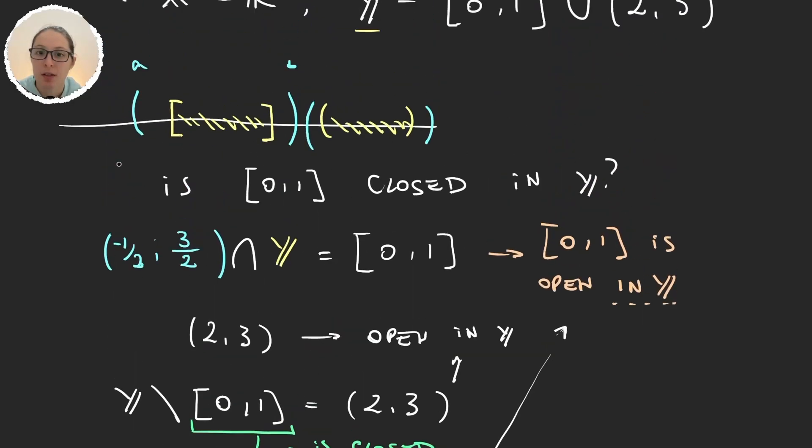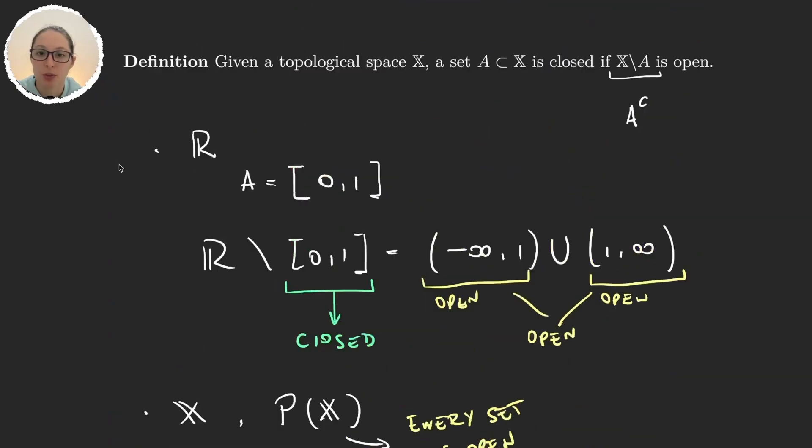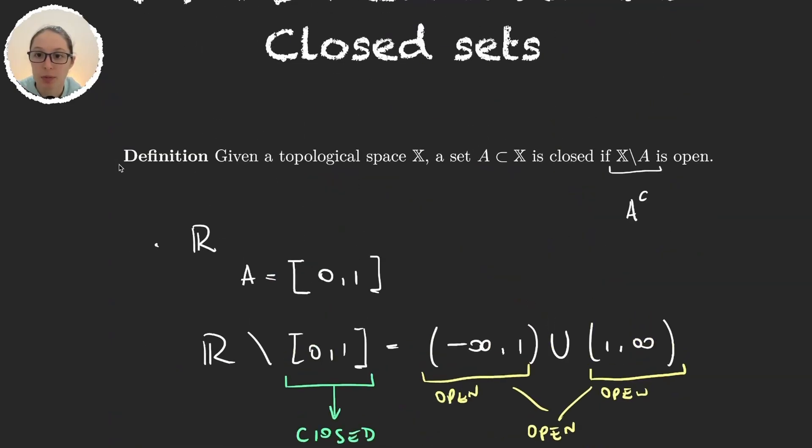So we can see that even if the definition of a set being closed is very simple, determining whether a set is open or closed can be very challenging because it depends on the topology that we are working with and the space. In the next video we will learn more properties about closed sets.